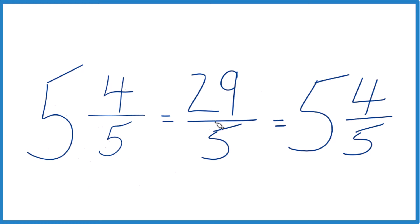And these numbers, they're equivalent. They have the same value. 29 fifths, that improper fraction, it's the same value as the mixed number 5 and 4 fifths. These are just different representations.